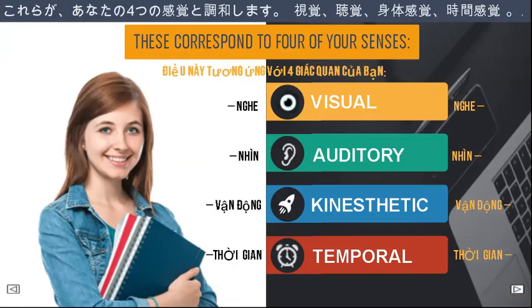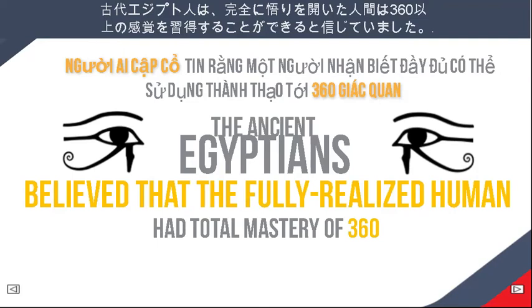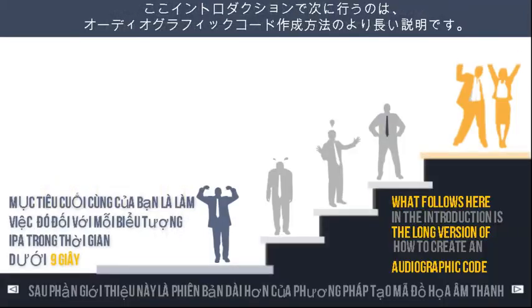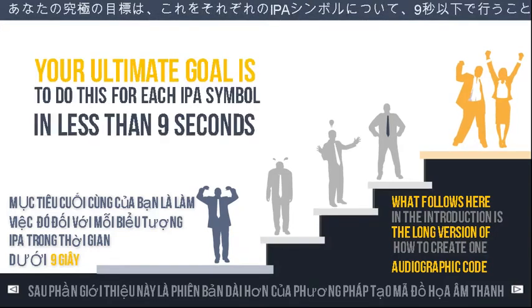These correspond to four of your senses: visual, auditory, kinesthetic, and temporal. The ancient Egyptians believed that the fully realized human had total mastery of 360 senses. What follows here in the introduction is the long version of how to create an audiographic code. Your ultimate goal is to do this for each IPA symbol in less than 9 seconds.